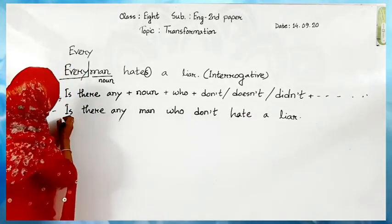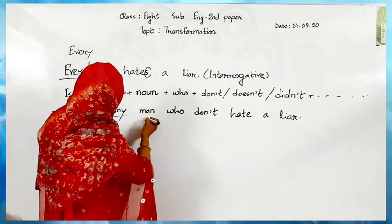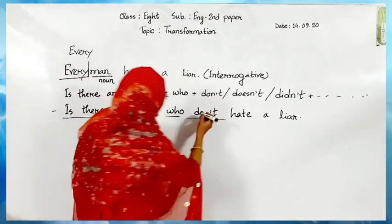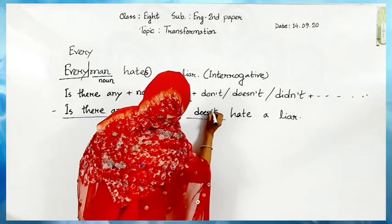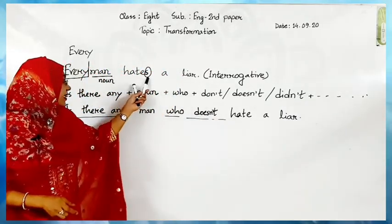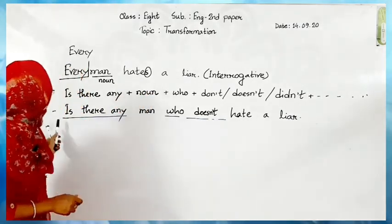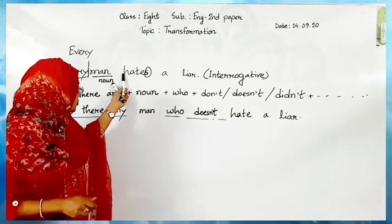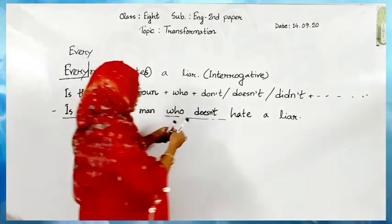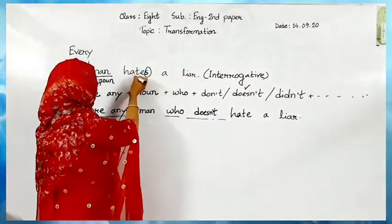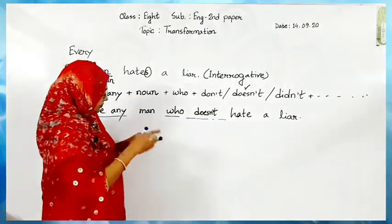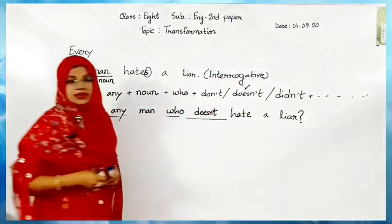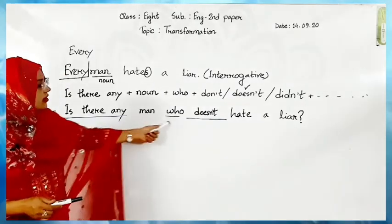Since 's' is with the verb, the answer is: 'Is there any man who doesn't hate a liar?' with a note of interrogation. You can easily see the changes: for 'every' we write 'is there any,' the noun is 'man,' then 'who doesn't' because 's' is with the verb. That's the answer.